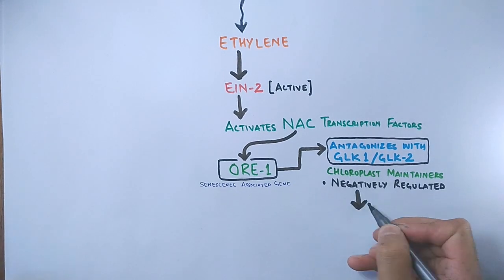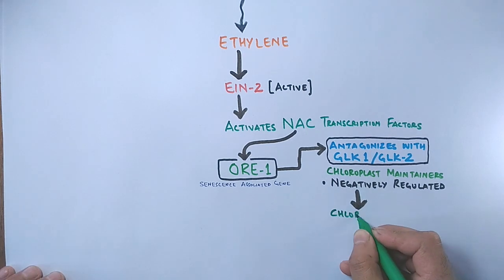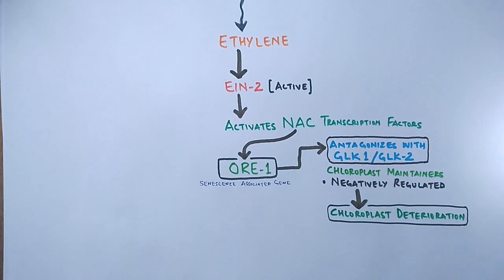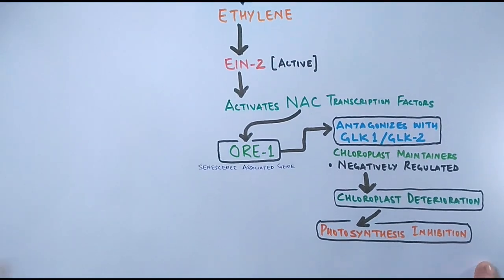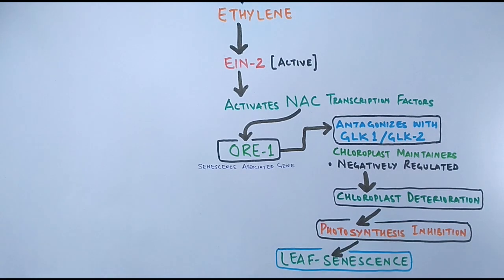So when these chloroplast maintainer genes remain unexpressed, that leads to chloroplast deterioration, which further causes photosynthesis inhibition that leads to the leaf senescence. So this is the first pathway.